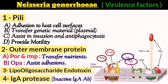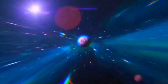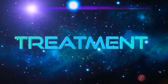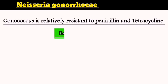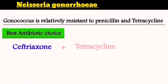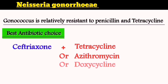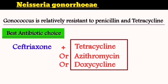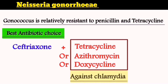N. gonorrhea is resistant to penicillin and tetracycline but can be treated with third-generation cephalosporins such as ceftriaxone. Tetracycline, azithromycin, and doxycycline can be prescribed alongside ceftriaxone to treat chlamydia, which often co-infects gonorrhea patients.